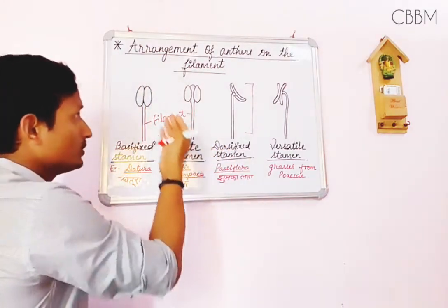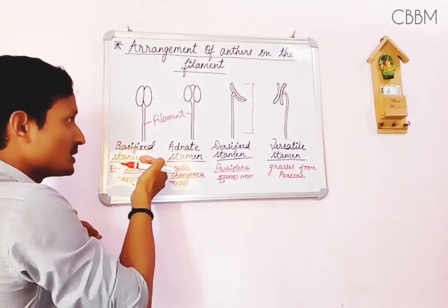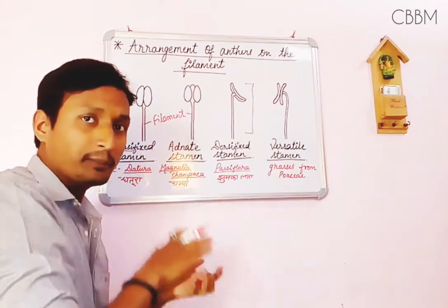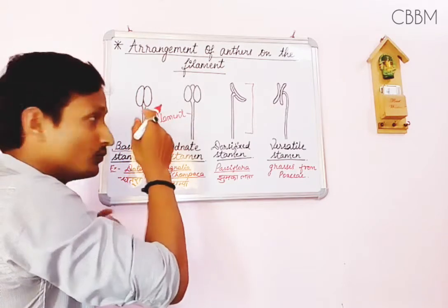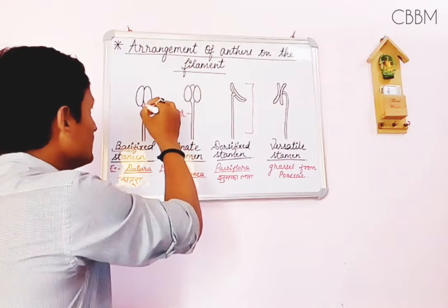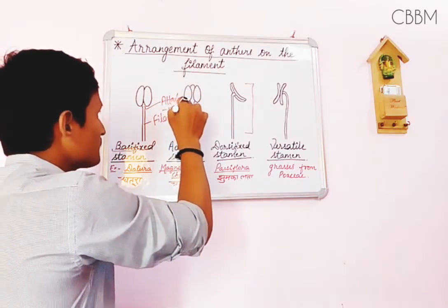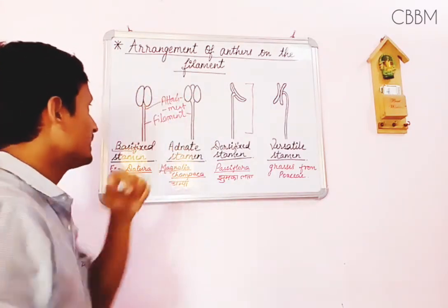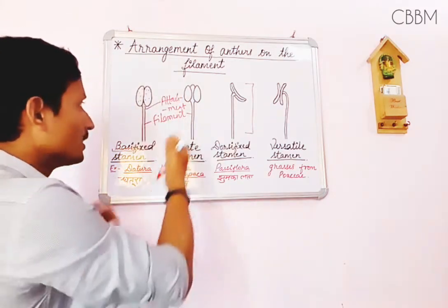Let us see the differences among these figures, as they have been named separately according to their differences. The first type is basifixed stamen. As the name suggests, 'basi' is related to the base — those anthers which are attached to the filament with their bases are called basifixed stamens. You can see the attachment point of the anther and filament, and these anthers possess the pollen sacs.